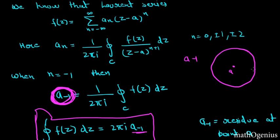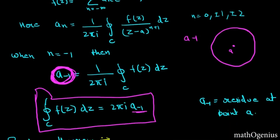If there is a singularity at a and a_{-1} is the residue there, then the integral along that curve C, ∮f(z)dz will be equal to 2πi multiplied by the residue at that point.